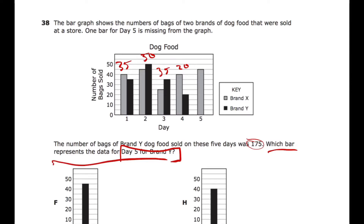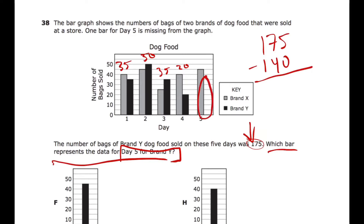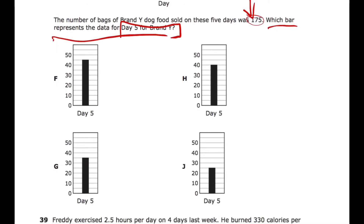We know there were 175 total bags, as stated in the problem. So 175 minus 140 tells us how many bags are in the missing bar for Brand Y. Five minus zero, seven minus four, and one minus one gives us 35 bags. We just have to find the answer choice that shows 35 bags.